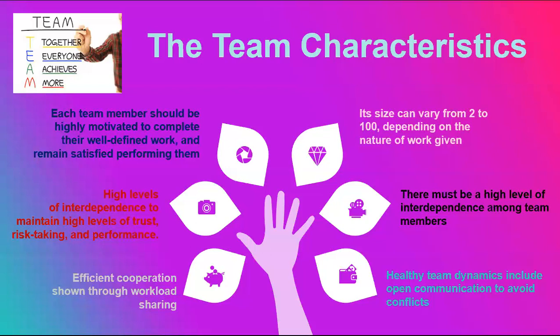Interdependence needs trust, risk-taking ability, and performance. You need to trust that other team members are doing the work in the best possible way. You need a risk-taking attitude because you are trusting a complete stranger. You need to have faith in each other's performance and believe that at the end of the entire process your collective performance will meet the organizational goal.